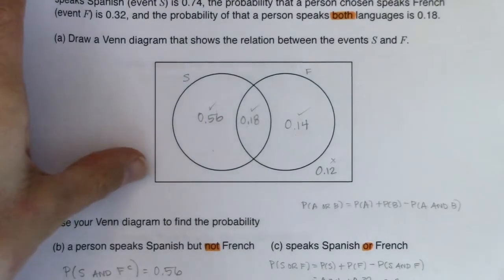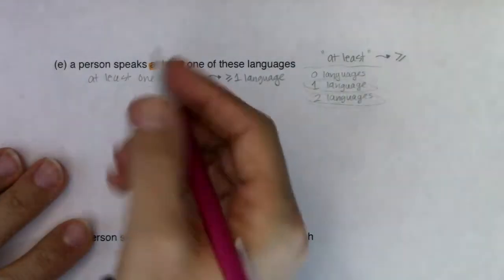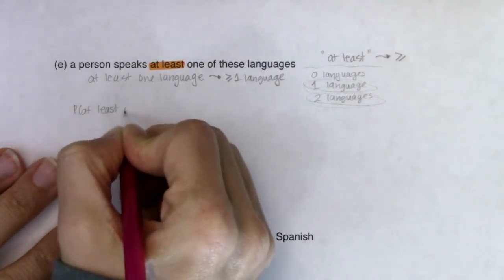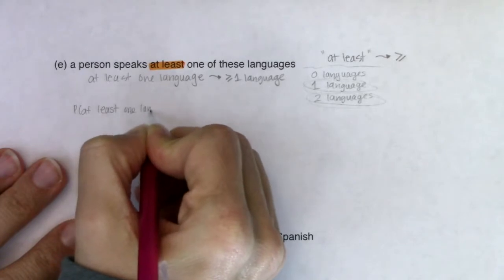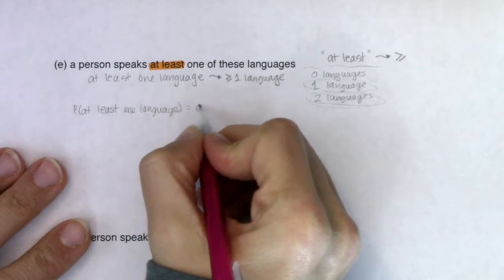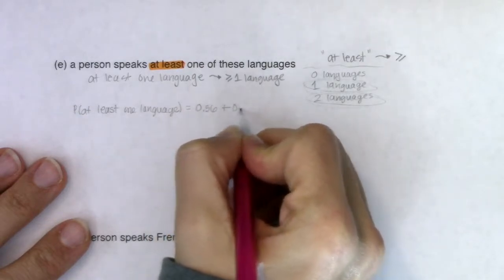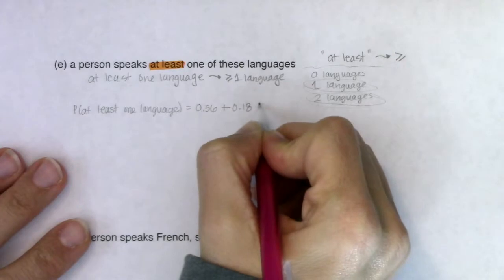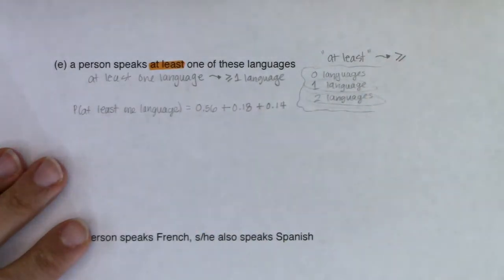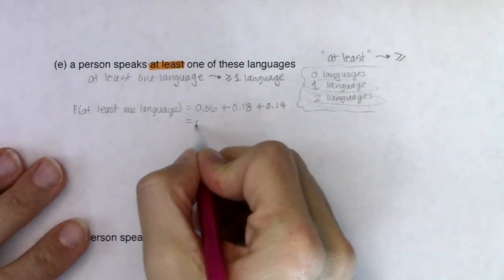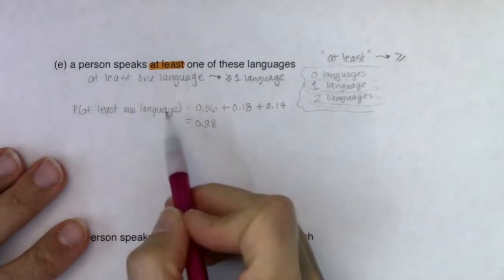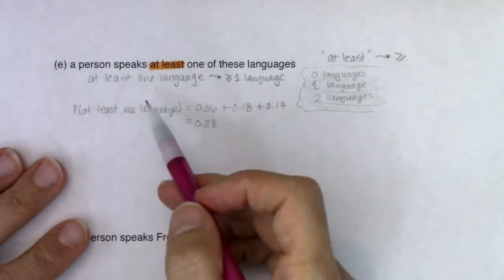We'll remember 56, 18, and 14. So when I want the probability that someone speaks at least one language, we have the folks that spoke just Spanish, the folks that spoke both, and the folks that spoke just French. When we add those three numbers together, we get 0.88. And I hope that seems a little familiar — this is the same as saying I speak Spanish or French.